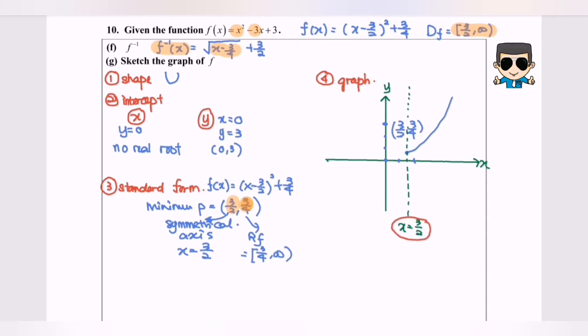For the quadratic situation, x equals 3 over 2 is a symmetric axis. For this F inverse, we have to determine the symmetric axis as well by referring to this one.